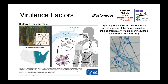Rather than discuss specific virulence factors, I'll describe the pathogenesis of these infections in broad terms. Blastomyces dermatitidis grows in the mycelial phase in the environment, producing spores that are generally either inhaled or rarely inoculated directly into the skin. Once inside the body, the elevated body temperature of 37 degrees Celsius stimulates these organisms to convert into the yeast form, which can then colonize the lungs, causing a respiratory tract infection, or disseminate to other parts of the body through the bloodstream.